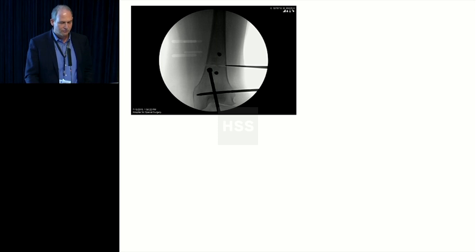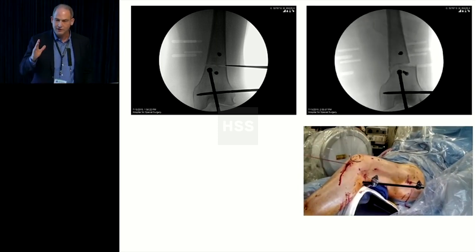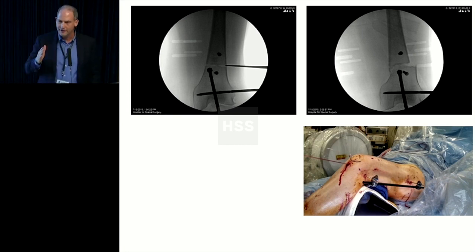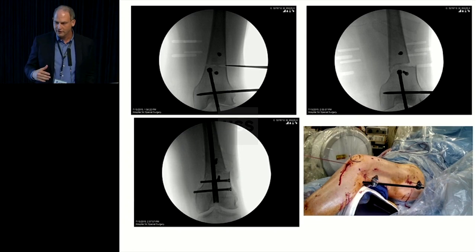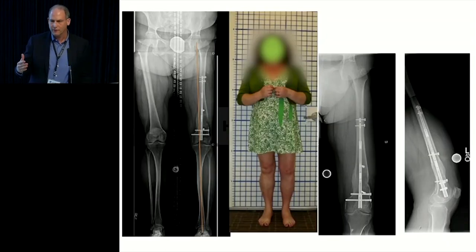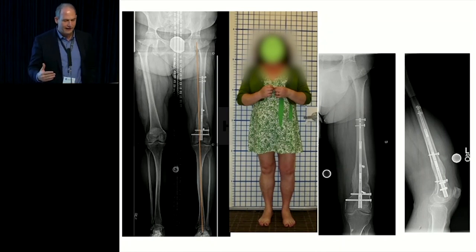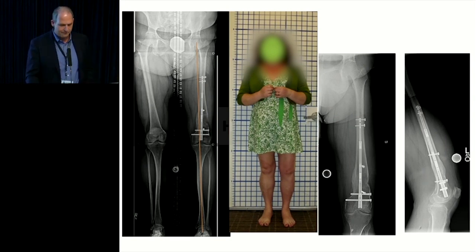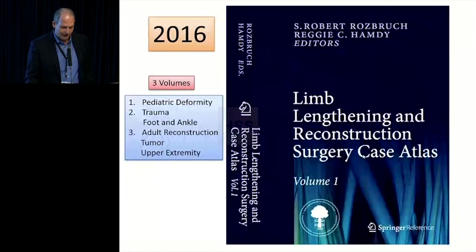The blocking screws are placed, the fixator is applied, the osteotomy is done, the acute correction is performed, the deformity is corrected, then you ream for the nail and insert the nail. Now deformity is corrected, and you do the gradual lengthening with the internal lengthening nail — accomplishing correction of deformity and leg length equalization. You can see really nice callus formation, the magnet, the gears, and the amount that the rod has distracted.